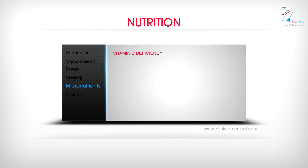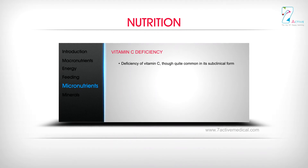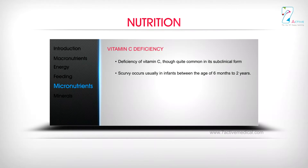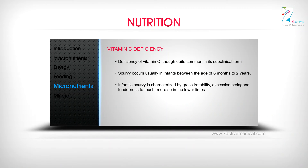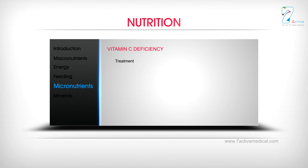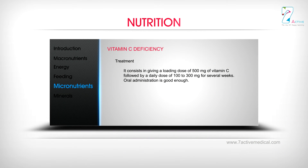Deficiency of vitamin C, though quite common in its subclinical form, leads to scurvy, which occurs usually in infants between 6 months and 2 years of age. Infantile scurvy is characterized by gross irritability, excessive crying, tenderness to touch especially in the lower limbs, and scorbutic rosary from posterior displacement of the sternum. Treatment consists of a loading dose of 500 mg of vitamin C followed by 100 to 300 mg daily for several weeks, orally.